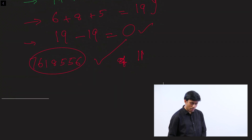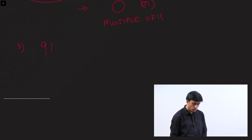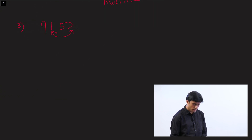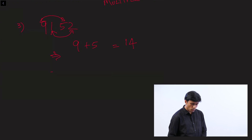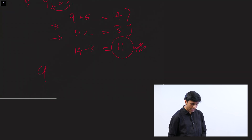Remember, you have to look for two things: the difference needs to be either 0 or a multiple of 11. Let's do one more: 9,152. Take the alternate digits — 9 plus 5 equals 14, and 1 plus 2 equals 3. The difference is 14 minus 3 equals 11. Since you got 11, which is a multiple of 11, the number 9,152 passes the test and is divisible by 11.